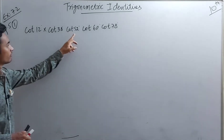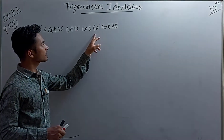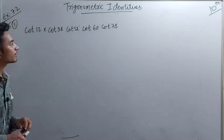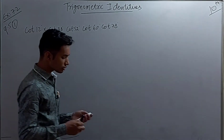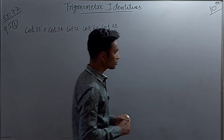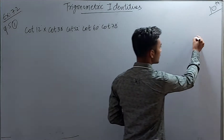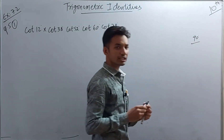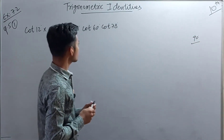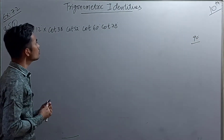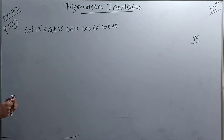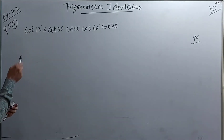All the terms given are cotangent terms: cot 12°, cot 38°, cot 52°, cot 60°, and cot 78°. Now we have to set up the relationship using 90°. We have to identify which pair of terms adds up to give 90°.